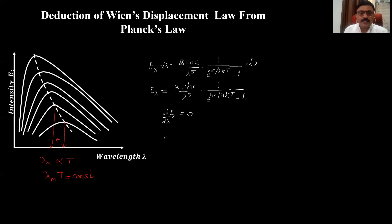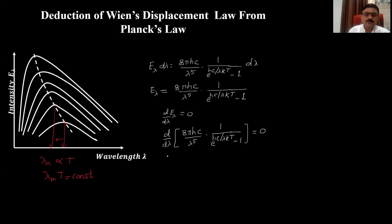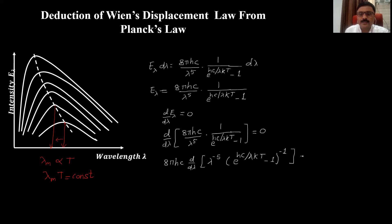We solve this by writing d/dλ of E_λ, which is (8πhc / λ⁵) × [1 / (e^(hc/λkT) − 1)], equal to zero. Taking 8πhc outside the differentiation as a constant, we write: 8πhc × d/dλ [λ^(−5) × (e^(hc/λkT) − 1)^(−1)] = 0.